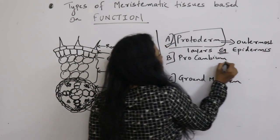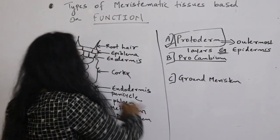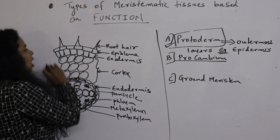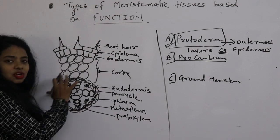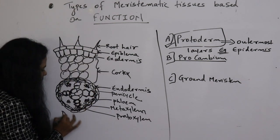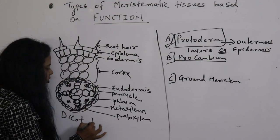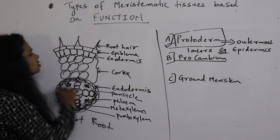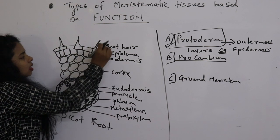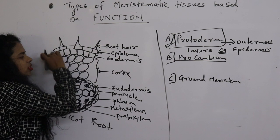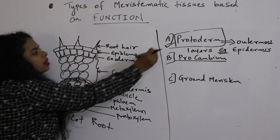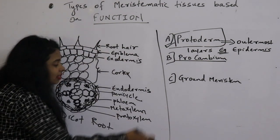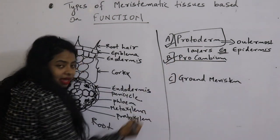Now let's consider procambium. In this diagram, this is the structure of a dicot root. Dicot root consists of the outermost root hair, epidermis, and exodermis. These outermost layers are made up of protoderm. Now let's talk about procambium.